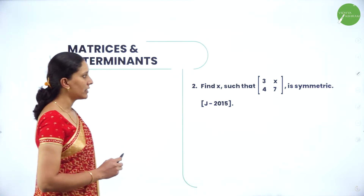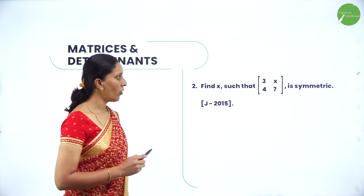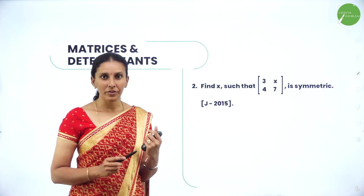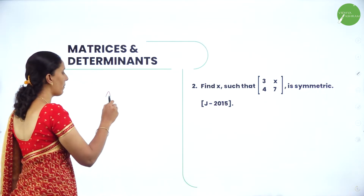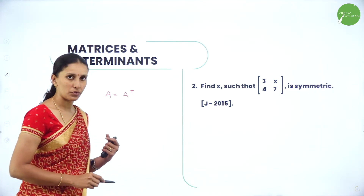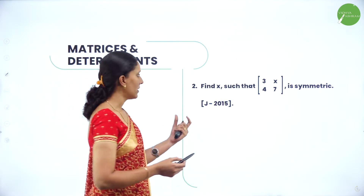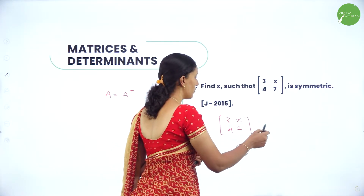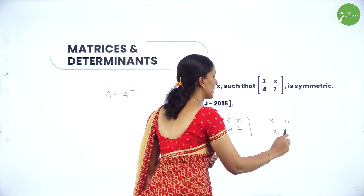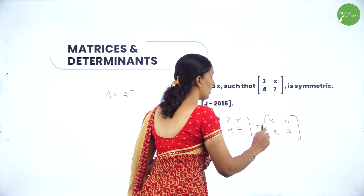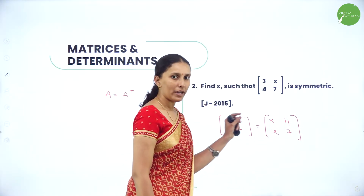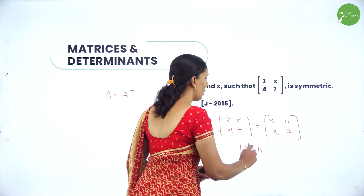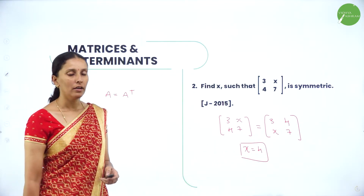Next, find x such that [3, x; 4, 7] is symmetric. A symmetric matrix means its transpose equals the given matrix, that is A = A'. When you transpose [3, x; 4, 7] you get [3, 4; x, 7]. Since both matrices must be equal, we can directly write x = 4.